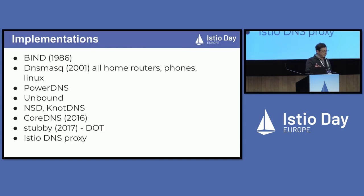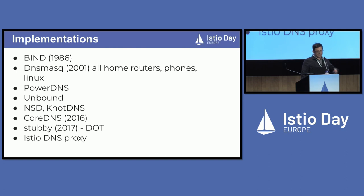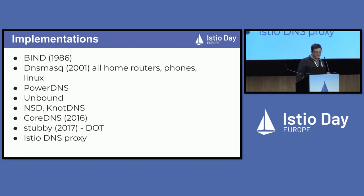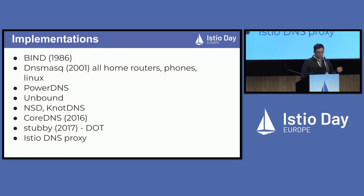There are many implementations of DNS. I'll mention BIND, which is still in use today — first released in 1986, rewritten a few times. But dnsmasq from 2001 is probably the most popular because it's used in all routers, most phones, and it's still used in Kubernetes. Then PowerDNS, Unbound, and a lot of high-performance options. The DNS community generally prefers many implementations for diversity, so CVEs and bugs don't affect the entire Internet. Most recently, CoreDNS, which is the default DNS server in Kubernetes. Stubby is an interesting one — plain DNS to DNS over TLS, providing security. And of course, Istio DNS, which we'll discuss soon.